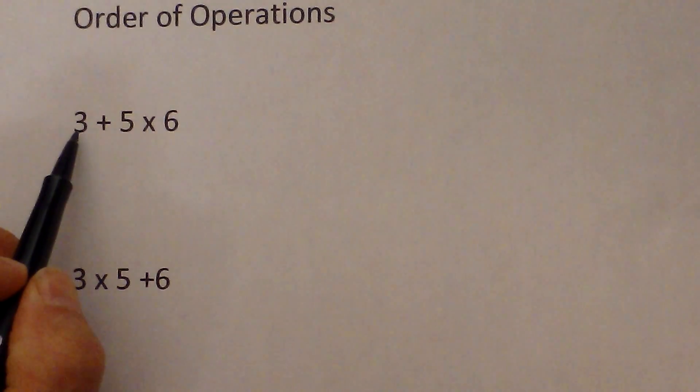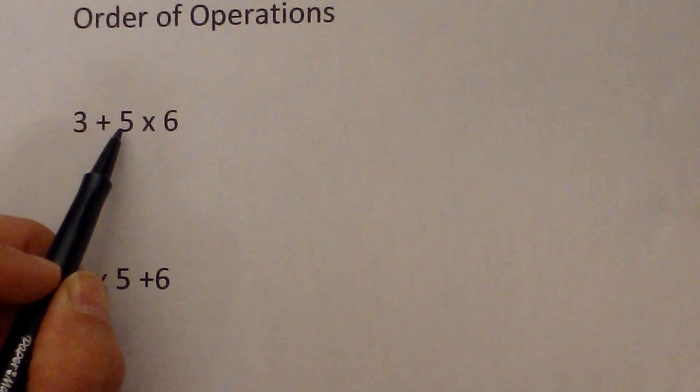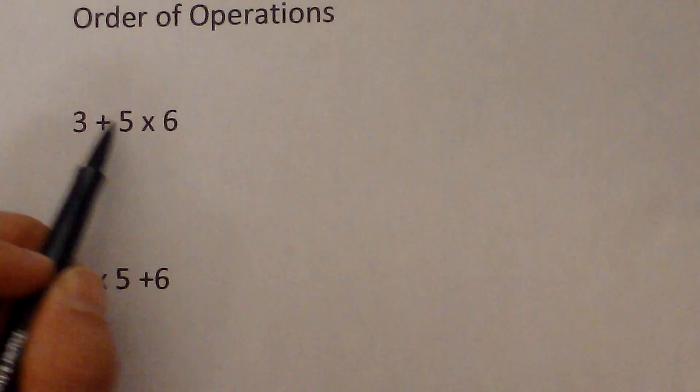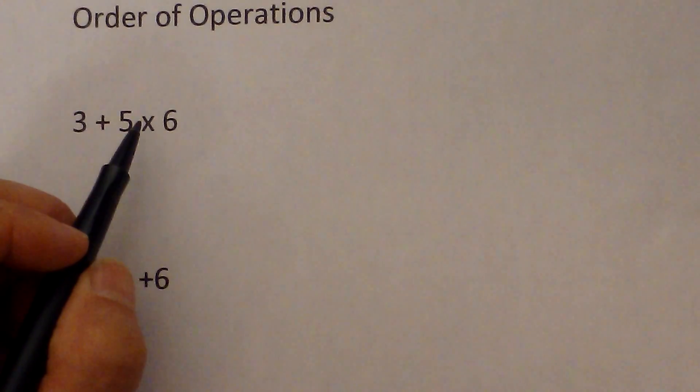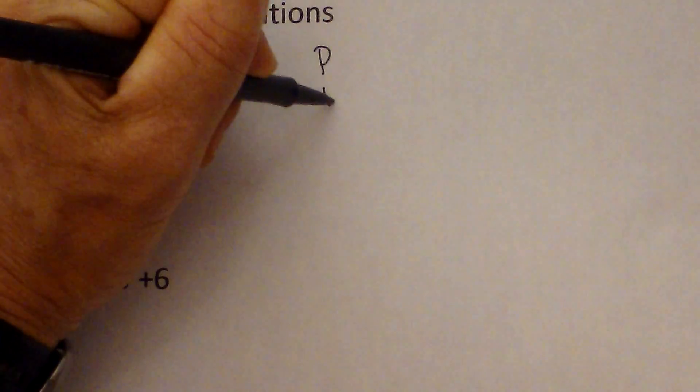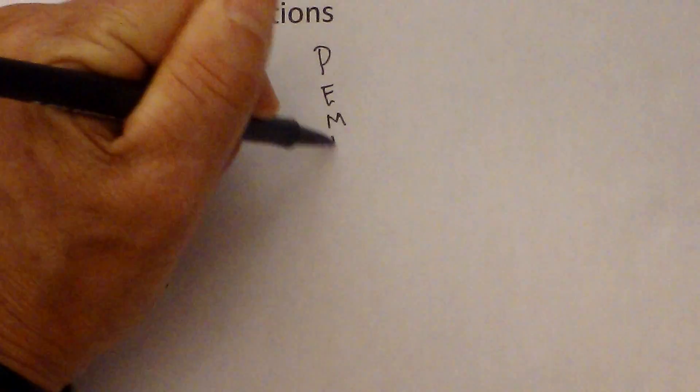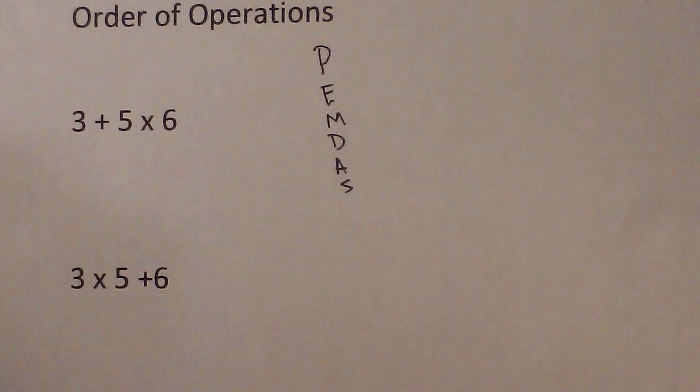So you would be tempted to just start and work left to right. 3 plus 5 is 8, and then you would multiply 8 times 6. But that would be the incorrect order of operations. So what I think is helpful is go ahead and write down PEMDAS and just go through and check them off as you encounter the operation.